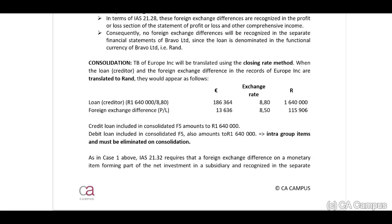In the consolidation, we receive a trial balance from the subsidiary containing two line items: the loan (a creditor in the statement of financial position) and the foreign exchange difference (a profit and loss line item). The loan is translated using the closing rate of 8.80, while the foreign exchange difference, being a profit and loss item, is translated using the average rate.